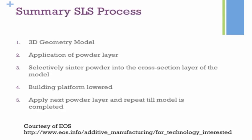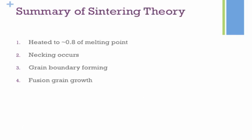To summarize, the SLS process is a five-step process: you have the 3D model, apply the powder layer, selectively sinter the powder into the cross-section of your model, the build platform lowers, then you apply the next powder layer and repeat until the model is completed, and recycle the remaining powder. For the sintering theory, there are four steps: the powder is heated to about 0.7 to 0.8 of its melting point temperature; then necking occurs between the powder grains; grain boundaries are formed; and then grain growth happens. The driving mechanism is that the powder wants to reduce its surface energy by reducing surface area.